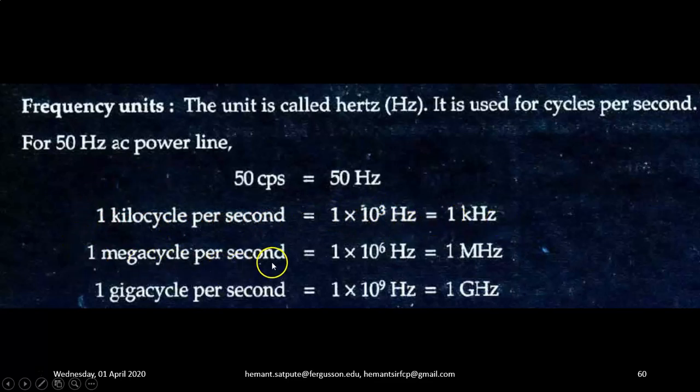One megacycle per second equals 1 × 10⁶ Hertz, that is 1 megahertz. One gigacycle per second equals 1 × 10⁹ Hertz, that is 1 gigahertz. Giga stands for 10⁹, mega stands for 10⁶, and kilo stands for 10³.